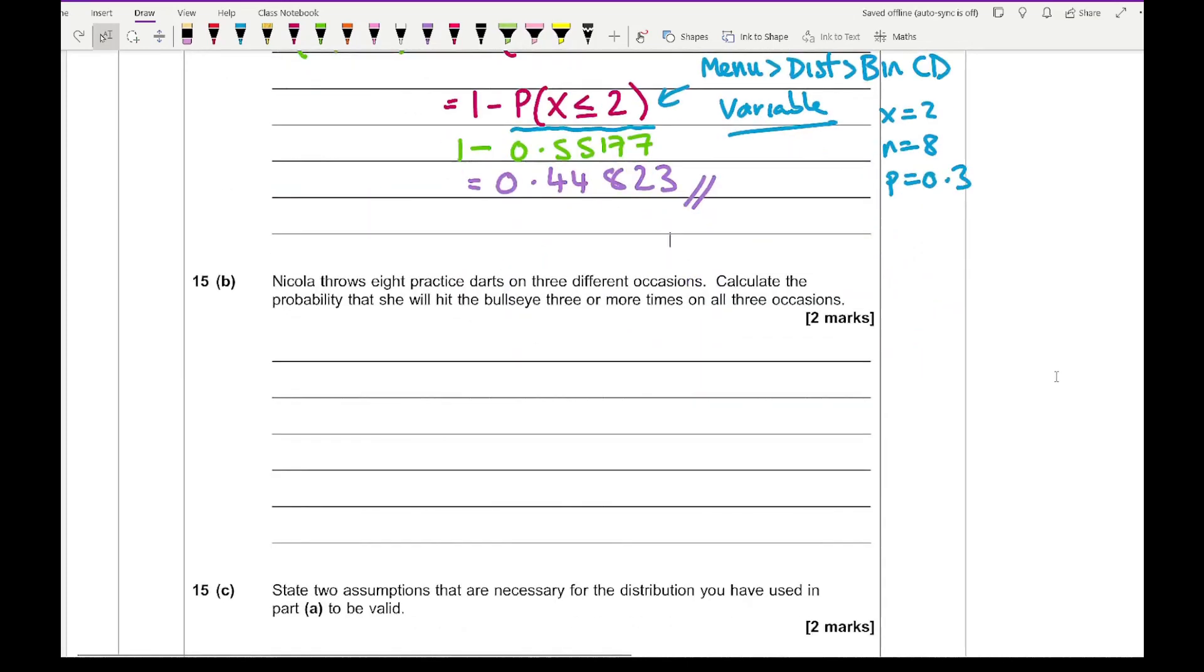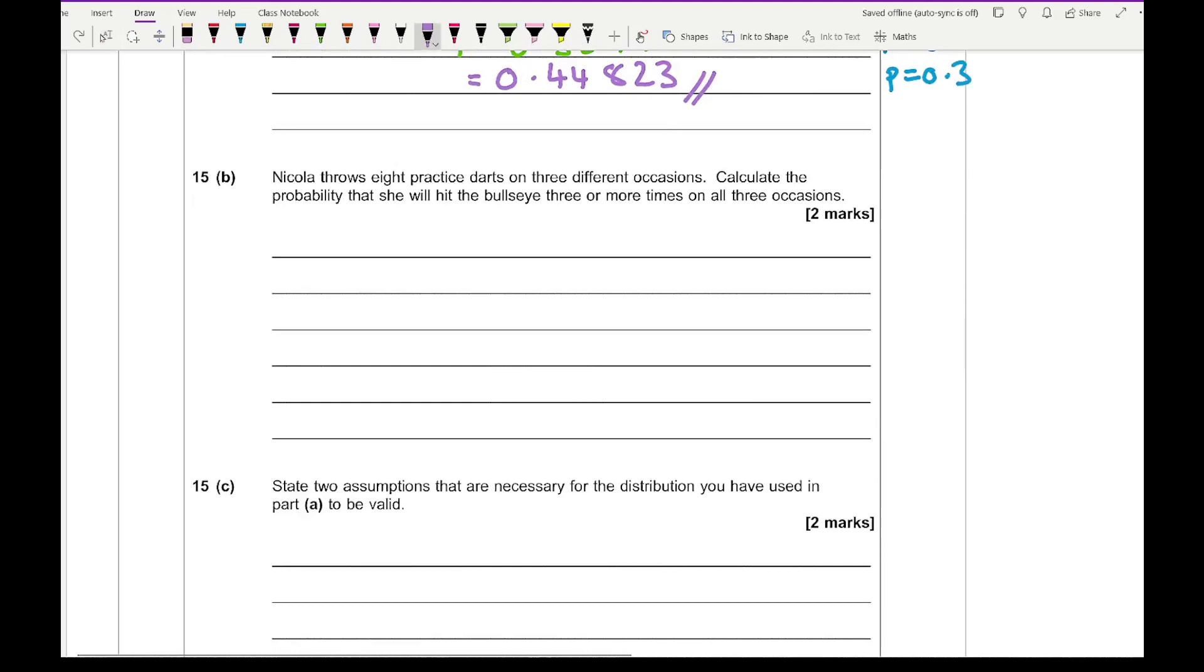It then says Nicola throws eight practice darts on three different occasions. Calculate the probability that she will hit the bullseye three or more times on all three occasions. We work out the probability of her hitting the bullseye three or more times, which is my answer in part A, and raise that to the power of 3. Typing that into my calculator gives 0.09005 to five decimal places.